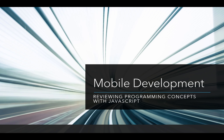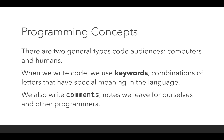Reviewing programming concepts with JavaScript. There are two general code audiences for programming: computers and humans. When we write code, we use keywords — combinations of letters that have special meaning in the programming language we're using. We also write comments, which are notes we leave for ourselves and other programmers. The computer pays attention to the keywords; humans pay attention to the comments. When we're writing code, we're writing to two different audiences at the same time.